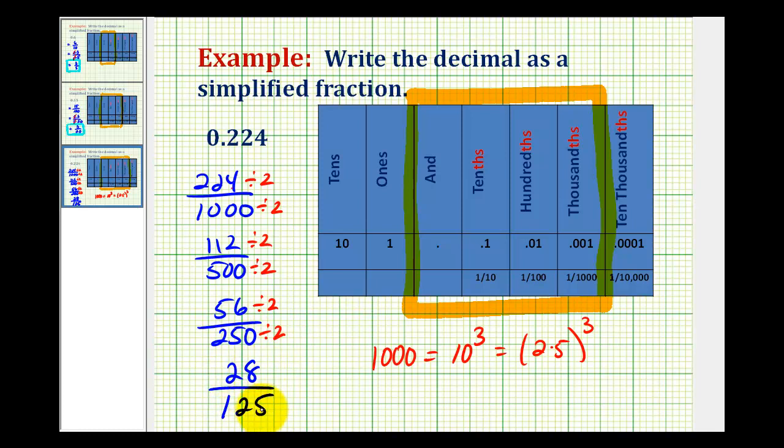Twenty-eight and one hundred twenty-five don't have any common factors. So now we know that this fraction is simplified.